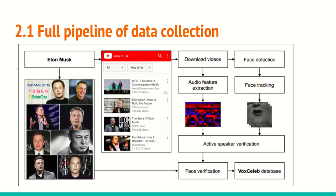Once they download the videos, those videos may have other faces and other people speaking — it's not only the target speaker's audio but combined with many other people's audio. What we are interested in is only the target speaker's audio. So they do face detection on the entire video — let's say a 10-minute video — and once they do face detection, they apply face tracking.